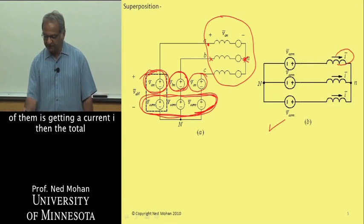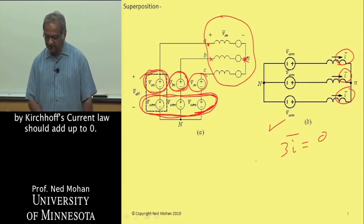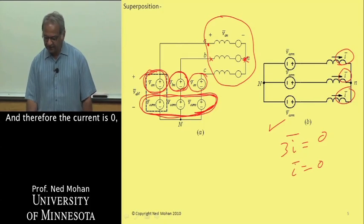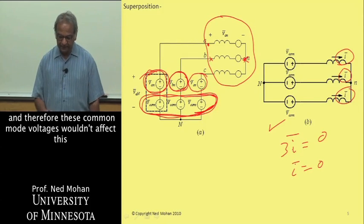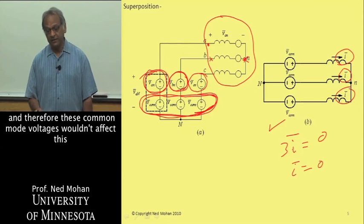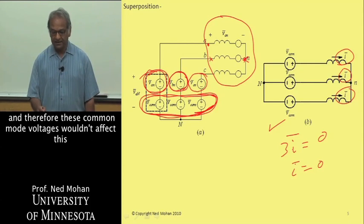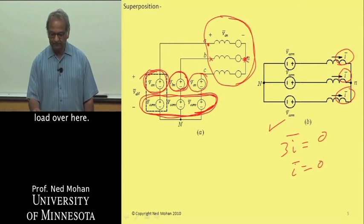identical voltages are applied to each of these three phases. Therefore, if each one of them is carrying a current I, then 3I by Kirchhoff's current law should add up to zero. Therefore, the current is zero. These common mode voltages wouldn't affect this load over here.